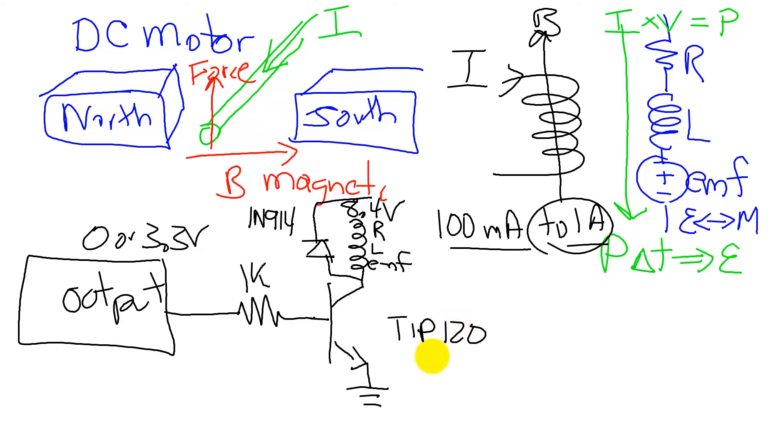This is an NPN Darlington, which essentially amplifies current. And so I'm going to have current on the order of milliamps driving out of the microcontroller, into the base, down to the emitter.